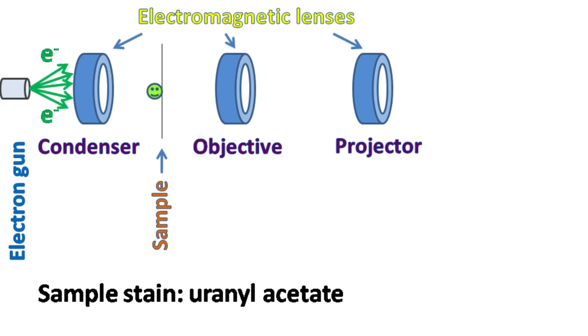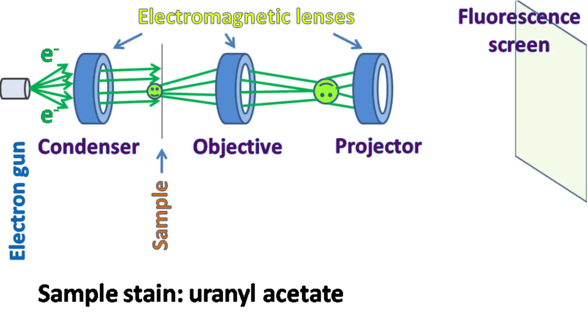Electrons are focused on the specimen using the condenser. The diffracted electrons by the specimen are collected by the objective lens. The electrons from the objective lens move through the projector lens, which projects the image of the specimen on the fluorescent screen. In transmission electron microscopy, the samples are usually stained with uranyl acetate.